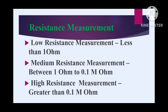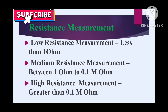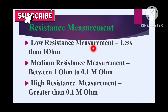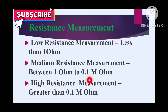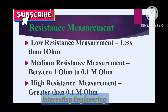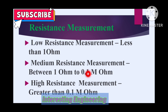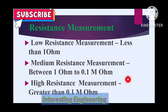Before entering into the topic, let's have a short preview of our previous videos. In those videos we discussed resistance measurement, which is classified under three broad categories: low resistance measurement, medium resistance measurement, and high resistance measurement. When the value of resistance is less than 1 ohm, it falls under low resistance. Values between 1 ohm to 0.1 megohm are medium resistance, and values greater than 0.1 megohm are high resistance.